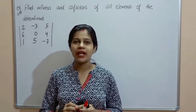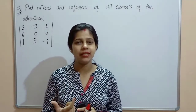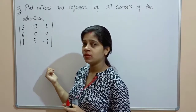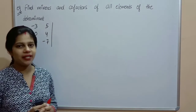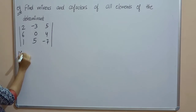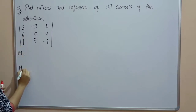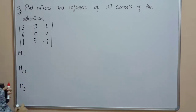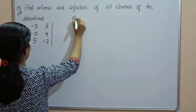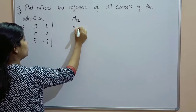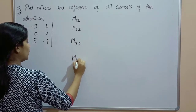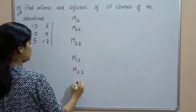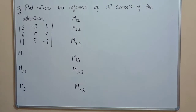Second example: find the minors and co-factors of all elements. The previous determinant was of order 2; this determinant is of order 3 — it has 3 rows and 3 columns. First we'll find all minors: M11, M21, M31, M12, M22, M32, M13, M23, M33.